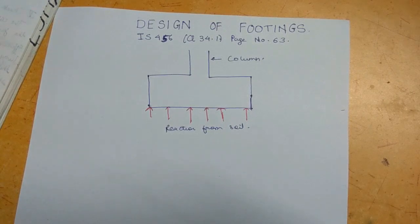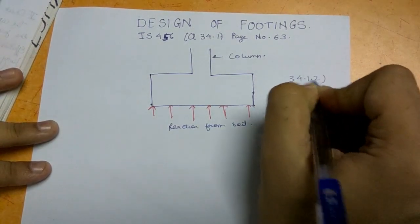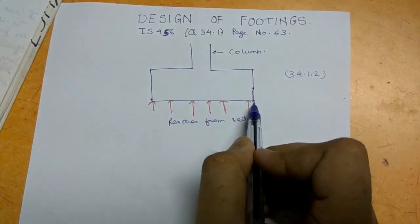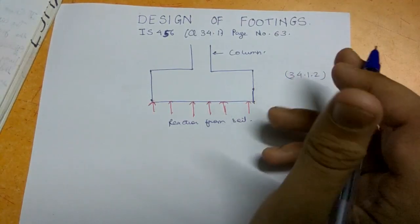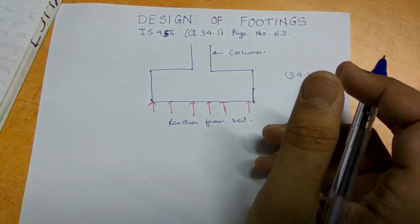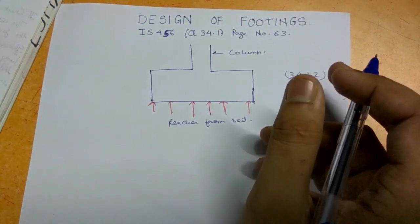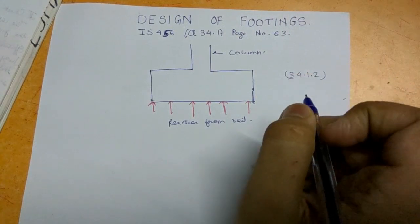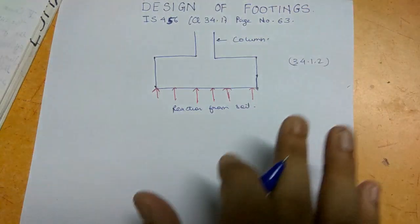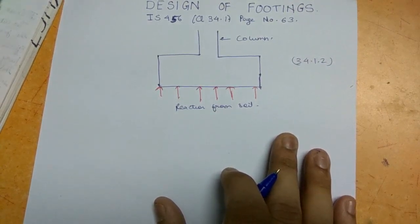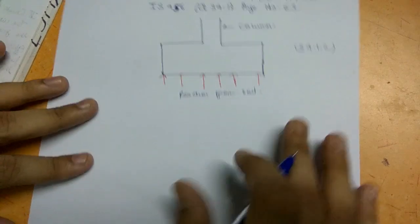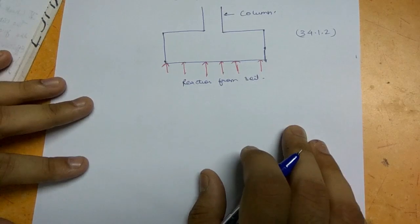In clause number 34.1.2, it says that the depth of the footing shall not be less than 150 mm when the footing is resting on the soil, and if you are providing the footing on a group of piles, then it should not be less than 300 mm. That covers the minimum depth of the footing.